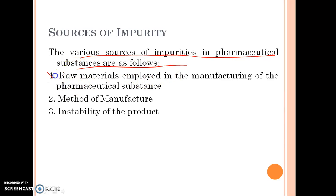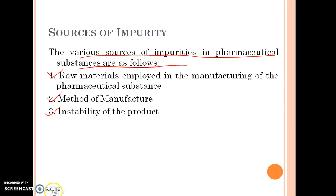First one: raw materials employed in the manufacturing of the pharmaceutical substances. Second: method of manufacture. And third one: instability of the product that leads to the impurity.